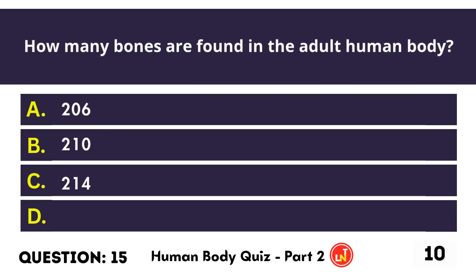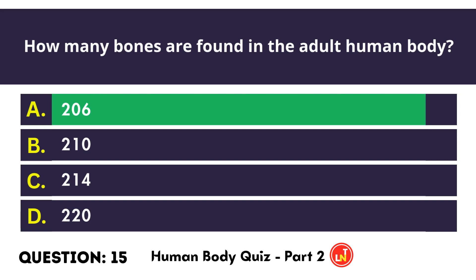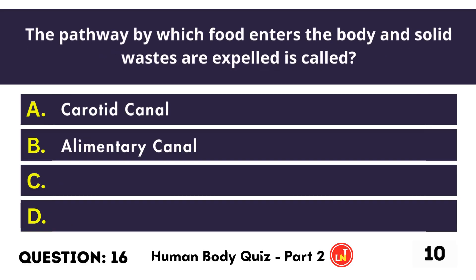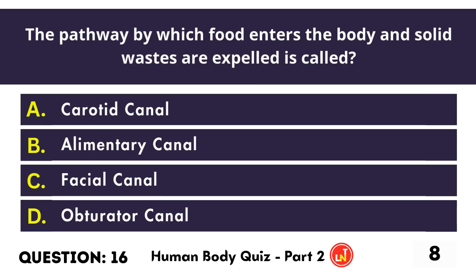How many bones are found in the adult human body? The pathway by which food enters the body and solid waste are expelled is called the alimentary canal.